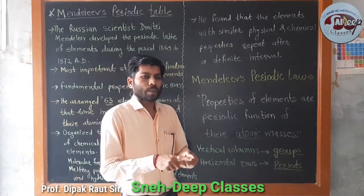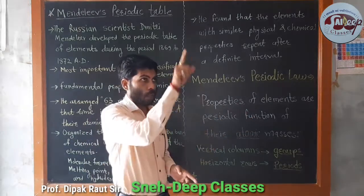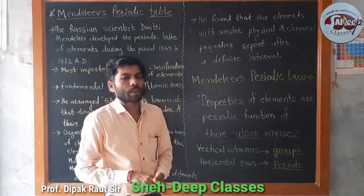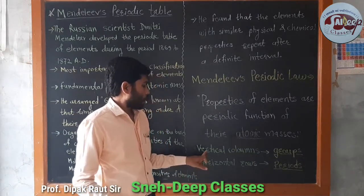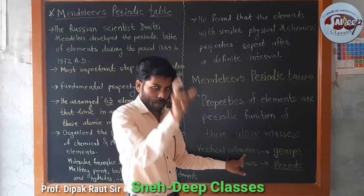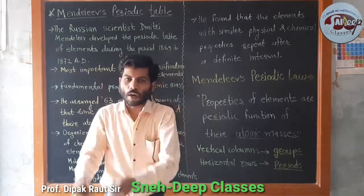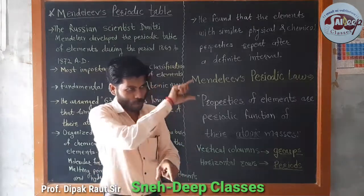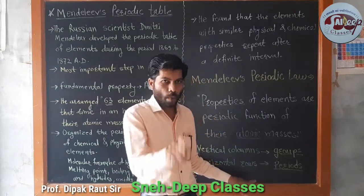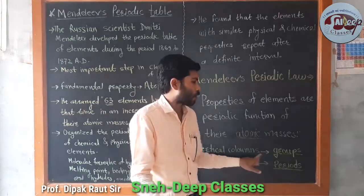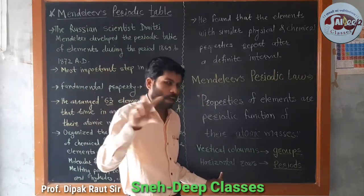Now, draw the structure of the periodic table and classify the elements. Draw vertical lines and horizontal lines. According to Mendeleev, the vertical columns are called groups, and the horizontal rows are called periods.